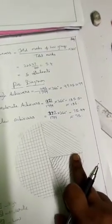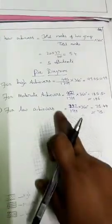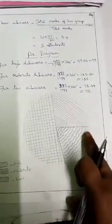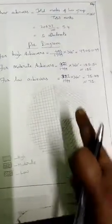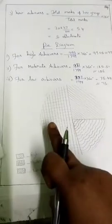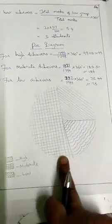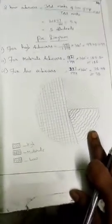Draw the pie diagram using a protractor. The angle for one section is approximately 99 degrees. Use the protractor to mark off each sector. Different shading is applied to each sector to distinguish low, moderate, and high achievers. The pie chart is then complete.